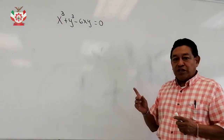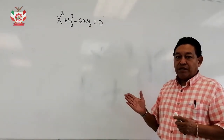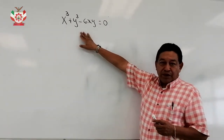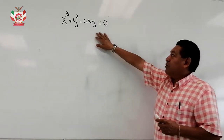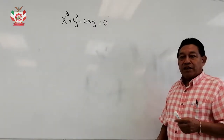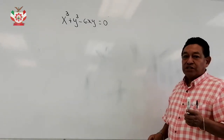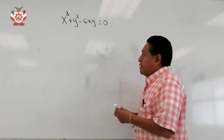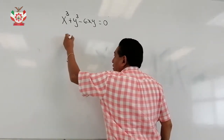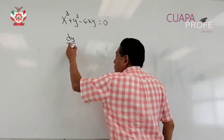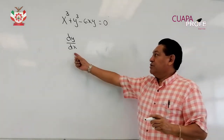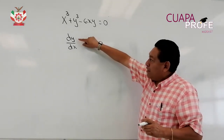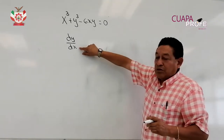Recuerden, una función implícita se denomina de esa manera porque no está despejada la variable dependiente. Aquí tenemos esta ecuación y vamos a derivar de manera implícita tomando en consideración que la derivada también la podemos representar como la derivada de y con respecto de x. Esta es otra anotación que se refiere a la derivada de la variable y con respecto de x.